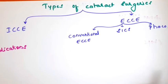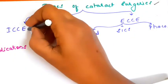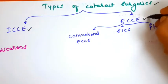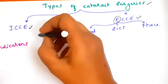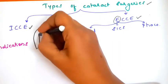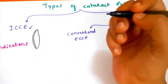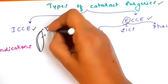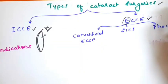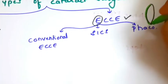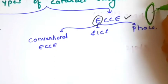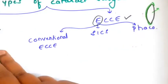Let's come to the types of cataract surgery. We have two main types: intracapsular cataract extraction (ICCE) and extracapsular cataract extraction (ECCE). The major difference is that in intracapsular cataract extraction, you are removing the whole lens along with the posterior capsule. Whereas in extracapsular, you are leaving behind the posterior capsule and a rim of the anterior capsule — only the rest of the lens part is taken out.